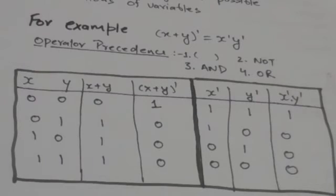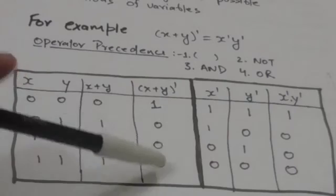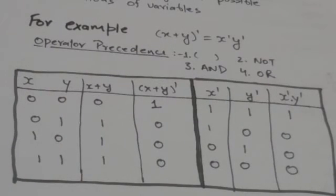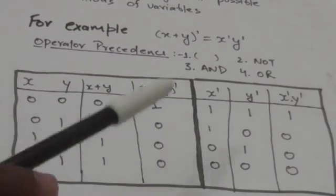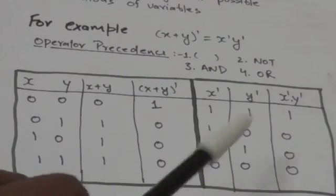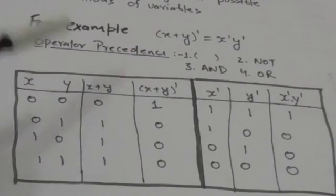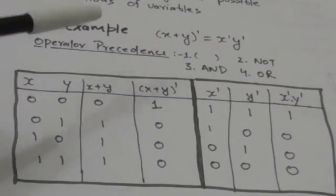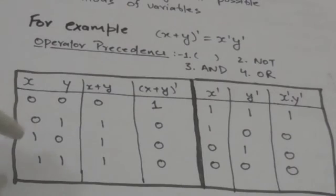Now when X is 1 and Y is 1, X OR Y will be 1 and the complement of X OR Y will be 0. The values of X complement and Y complement will both be 0, and the value of X complement AND Y complement will also be 0. Again both sides of the expression have the same value for this combination.